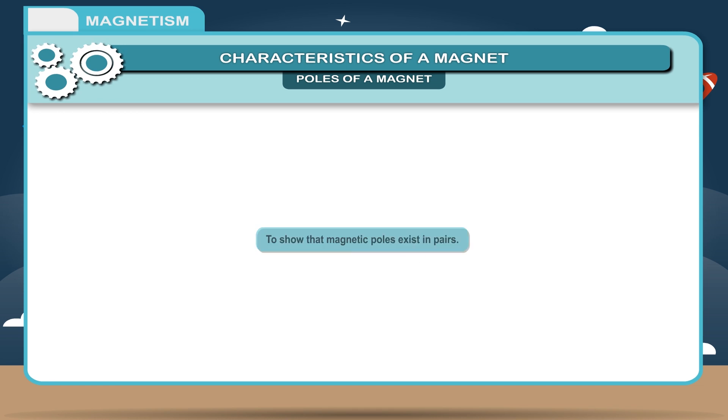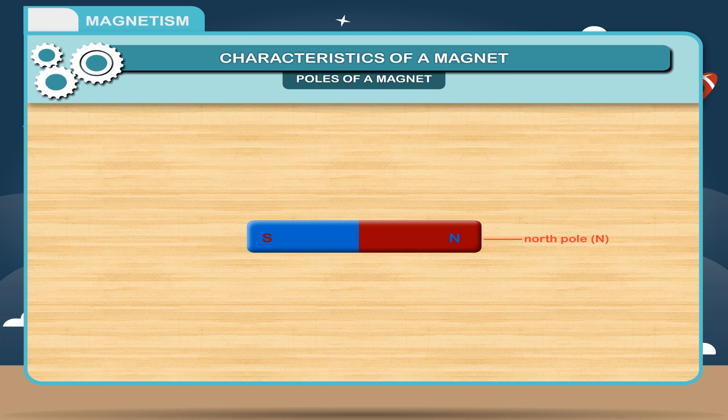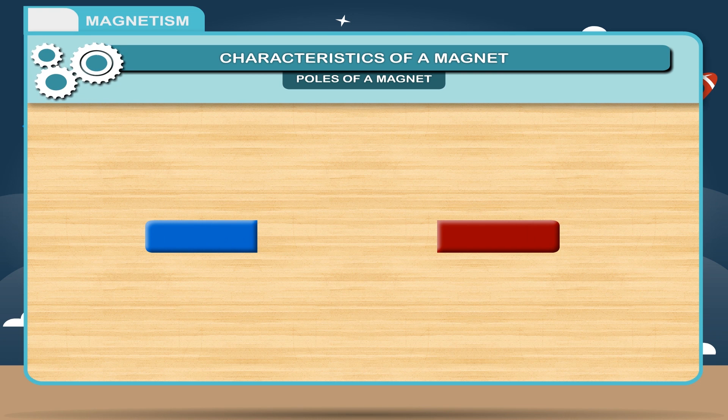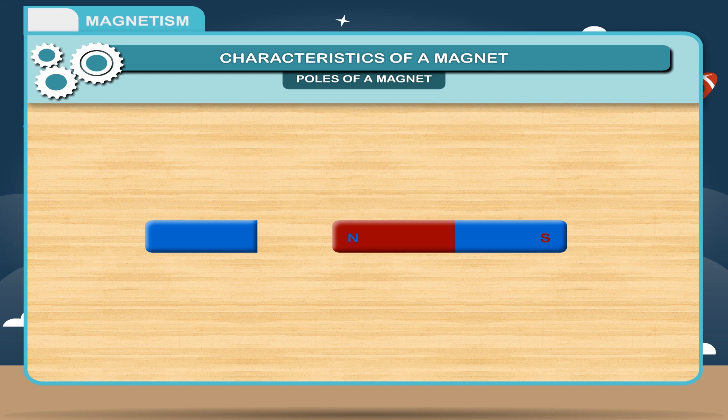Activity: To show that magnetic poles exist in pairs. Take a bar magnet having north pole, N, and south pole, S. Break the magnet from the center. Now, bring another magnet near a broken piece of the magnet in such a way that the north pole of the magnet is near the one end of the broken piece. You will observe that this end of the broken piece behaves like a pole which attracts or repels the magnet.